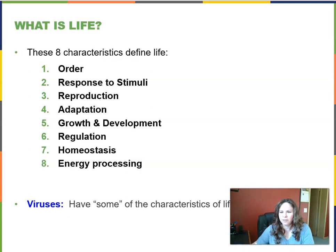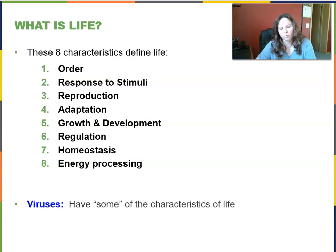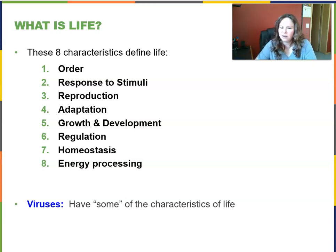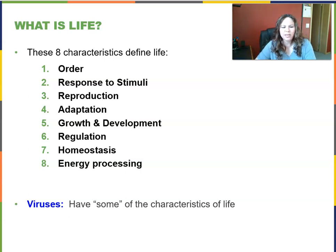Let's start with the properties of life — life's characteristics. What would be my checklist? In different textbooks these may be stated different ways, but in this textbook there are eight of them, in no particular order: order, response to stimuli, reproduction, adaptation, growth and development, regulation, homeostasis, and energy processing. Some of these are a little more straightforward than others.